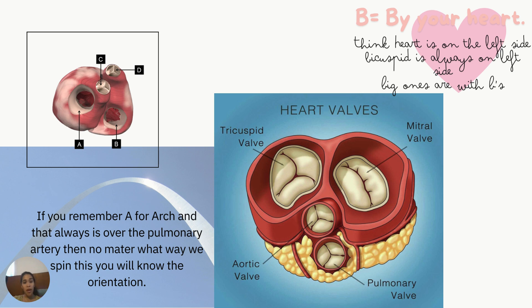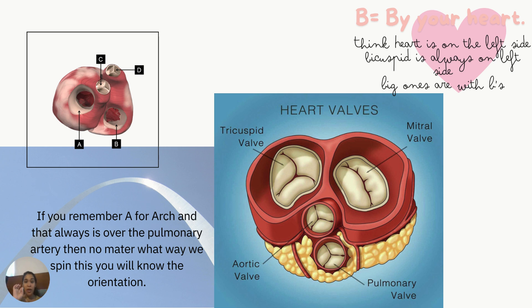Once you remember that the aorta arches over the pulmonary artery, you can understand their positions even when pictures are flipped. The bicuspid or mitral valve is on the left side — big ones go with the B. The aortic valve is going to be on top of the pulmonary valve. Go ahead and pause the video and try to label that.